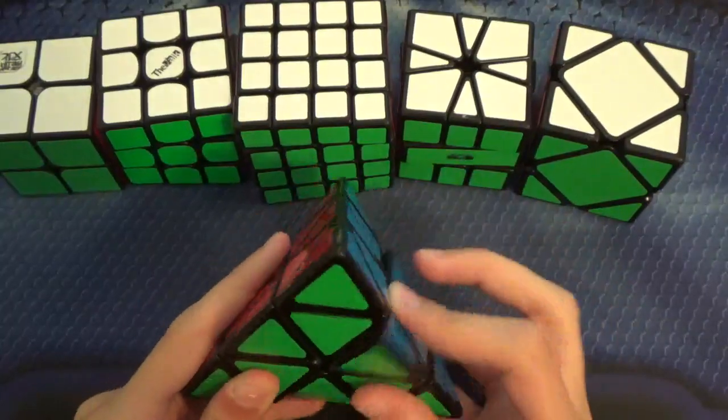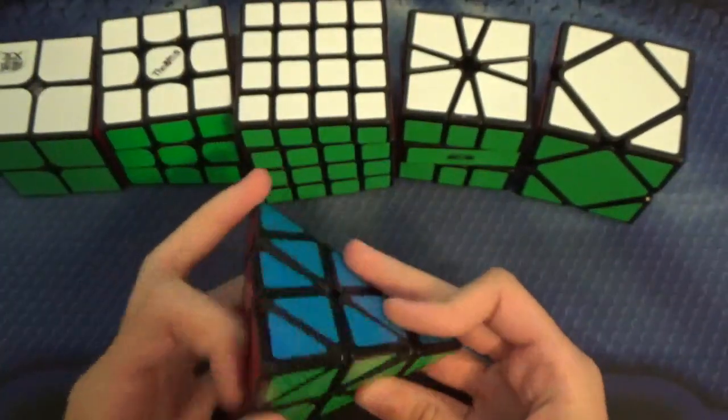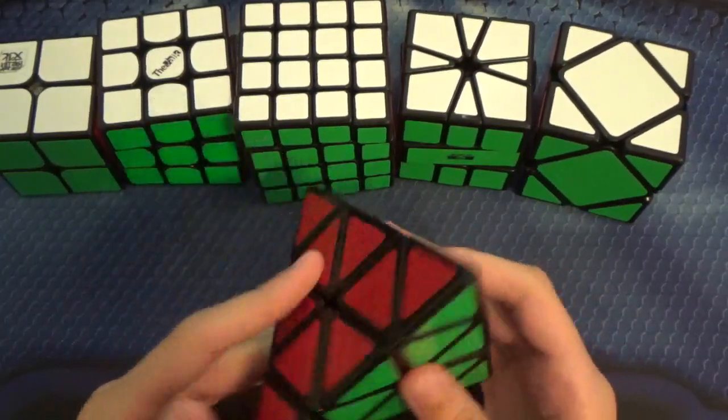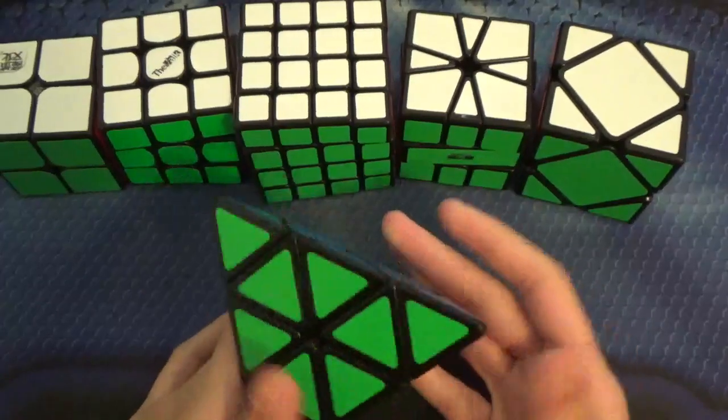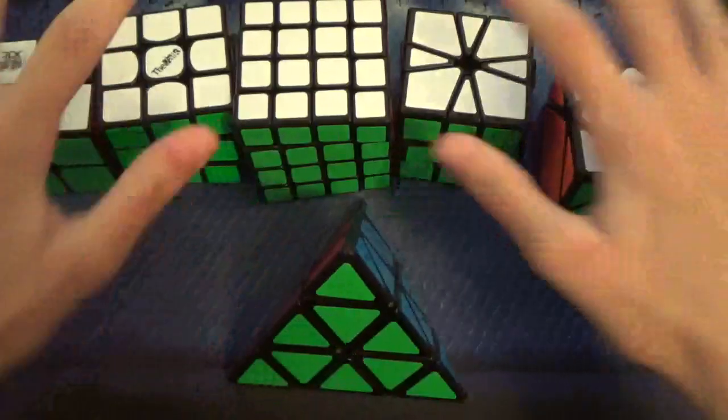The last event is Pyraminx, which there are 2 rounds of as well. I'm pretty excited. Just a sub 3 average and sub 2 single. I'm not sure about the single, but if not, just a low 2 will be fine. I'd like to obviously make the finals for both of these.